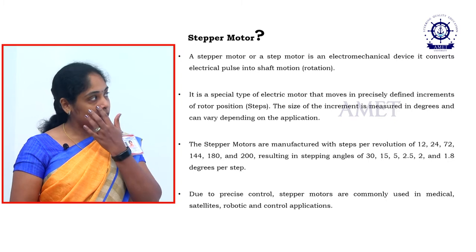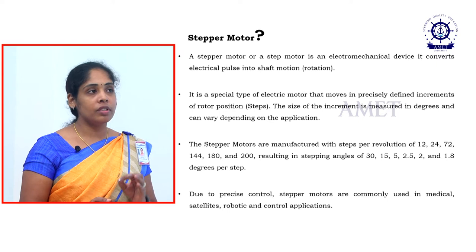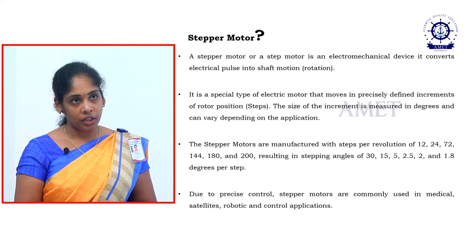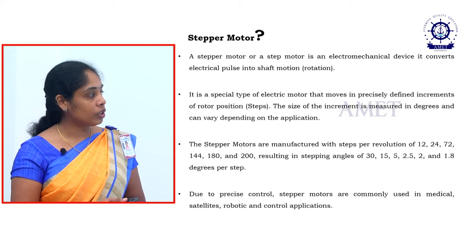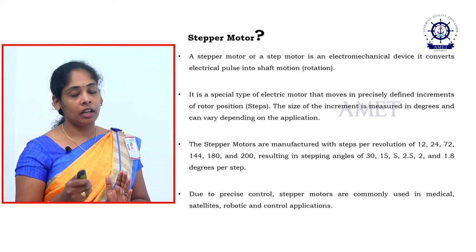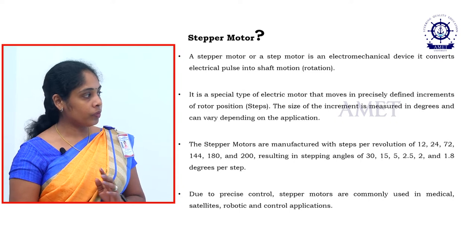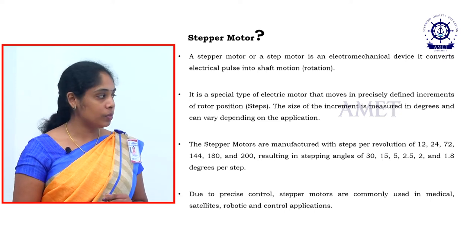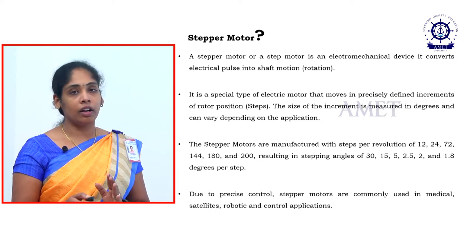It is a special type of electric motor that moves precisely in steps. Wherever we require step motion, we can use this stepper motor. These stepper motors are available in the range of 12, 24, and 72 revolutions per step — meaning it rotates step by step. The stepping angle can be 30, 15, 5, 2.5, and 1.8 degrees per step, showing how much the motor steps in degrees.